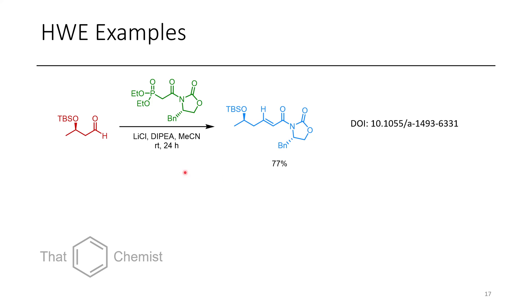Now, I'm going to show two additional examples of the HWE reaction. In this case, we have a protected TBS alcohol, and this reacts with an Evans auxiliary to get this alpha-beta unsaturated amide product. These are usually used to help install stereochemical reactions in alpha or beta positions, or do aldol-type chemistry.